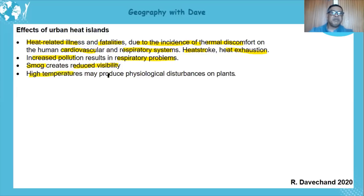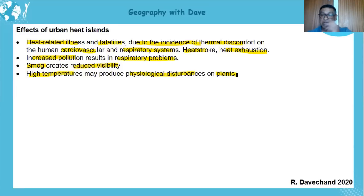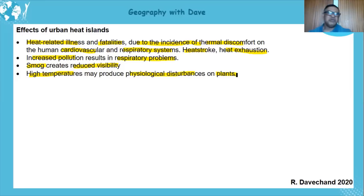High temperatures may also produce physiological disturbances in plants, as they are not adapted to these high temperatures. As the urban heat island grows, plants can dry out and experience various stress effects. Heat islands are not a good thing — they cause a wide range of problems.